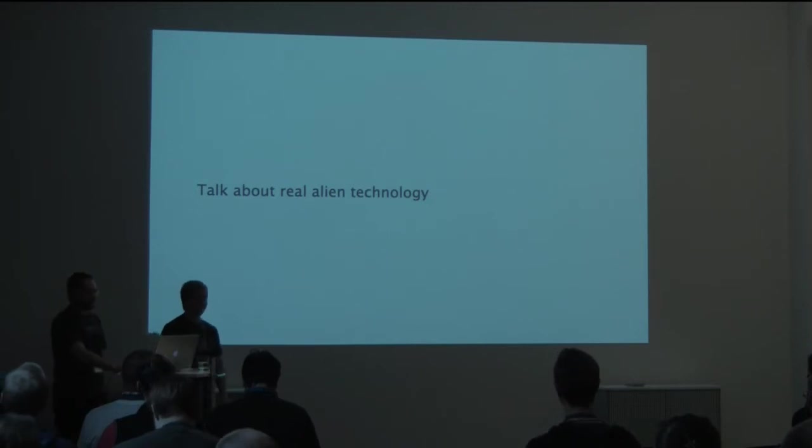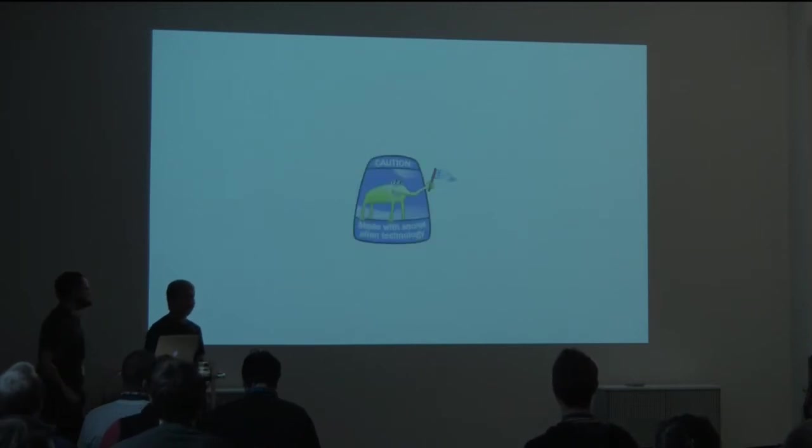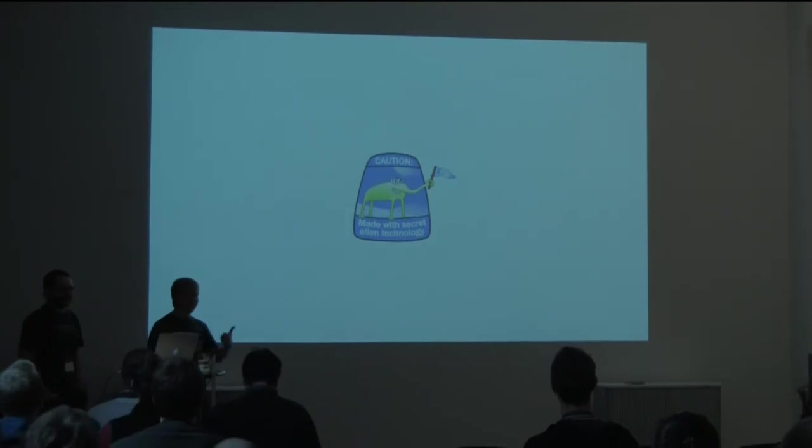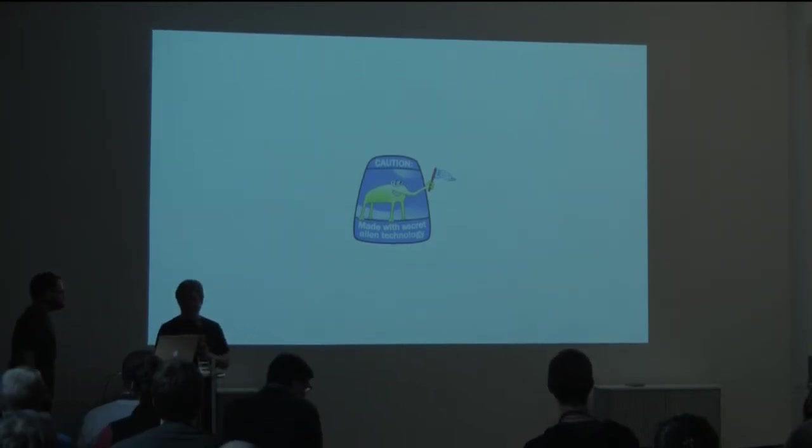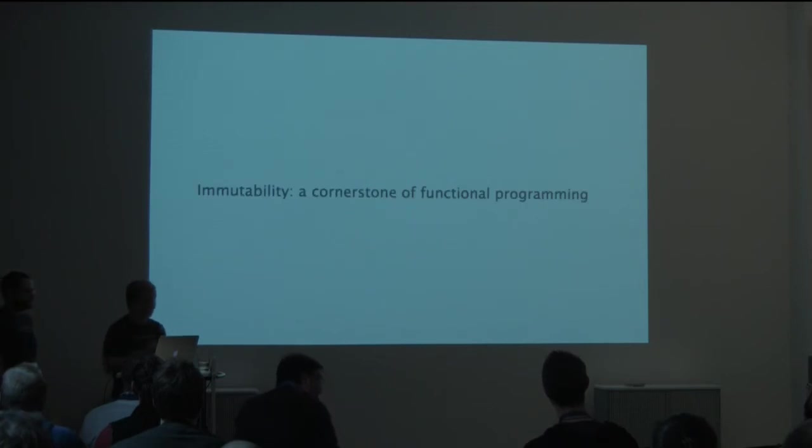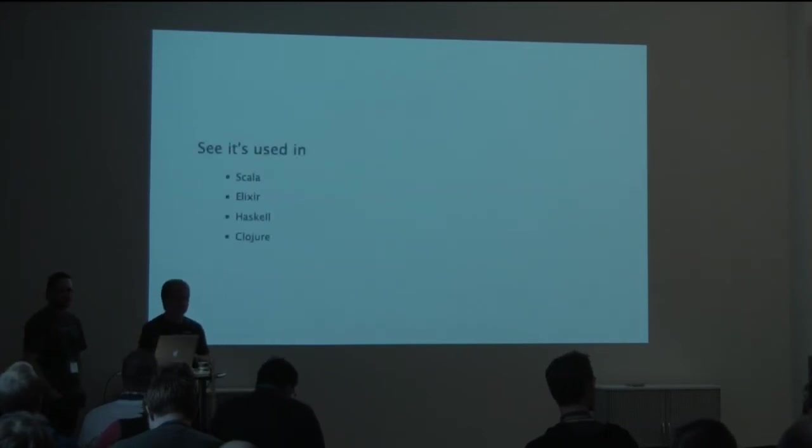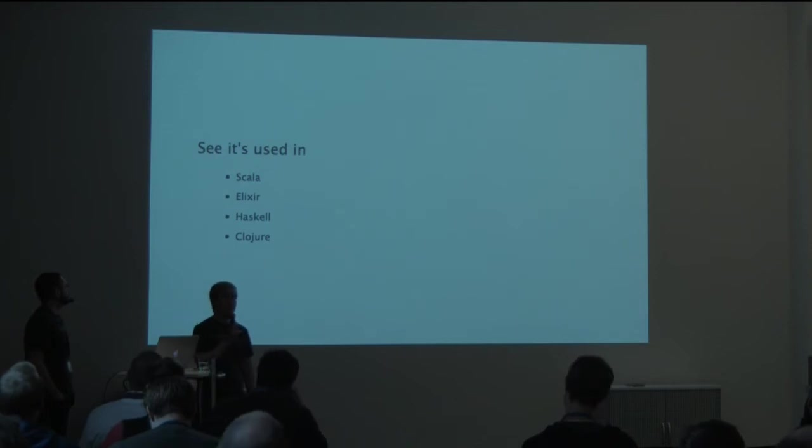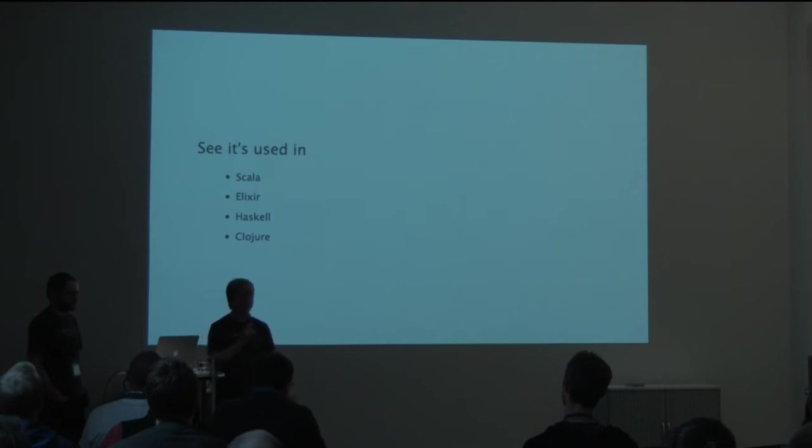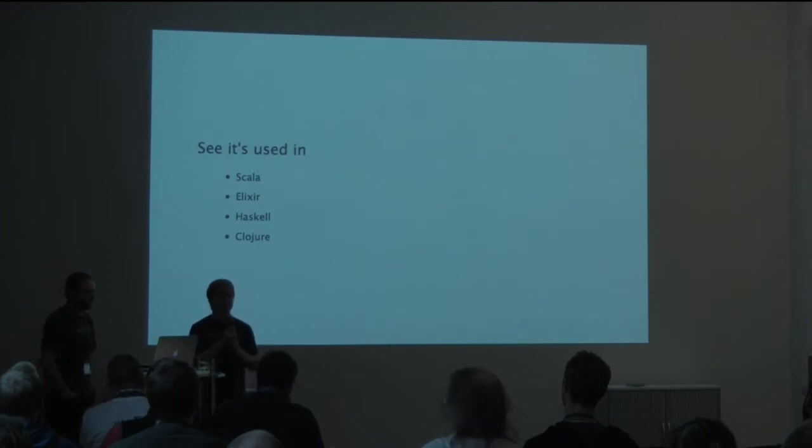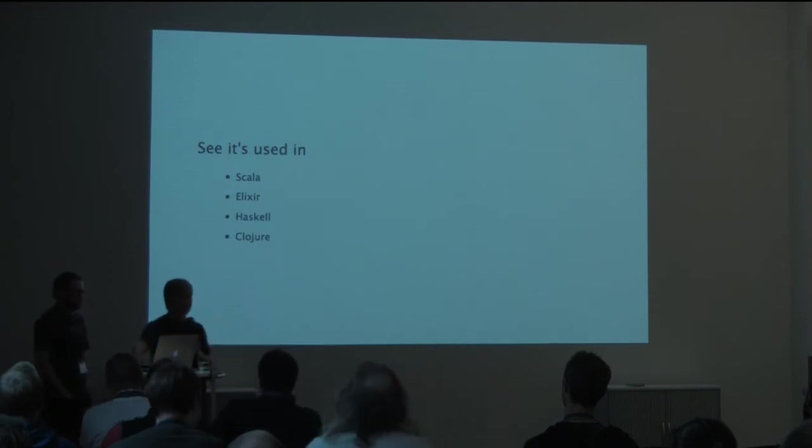We're here to talk about real alien technology and that is secret list alien technology. And that's about immutability, one of the cornerstones of functional programming. That it is used in all of these languages as the core data types are immutable. Like in Scala, Elixir, Haskell, and Clojure, all their data and data types are immutable by default.